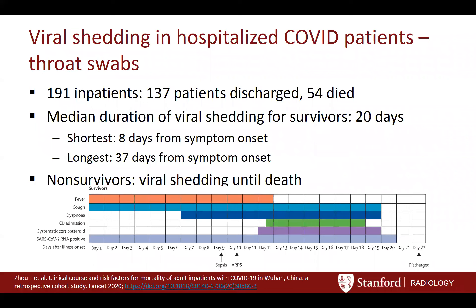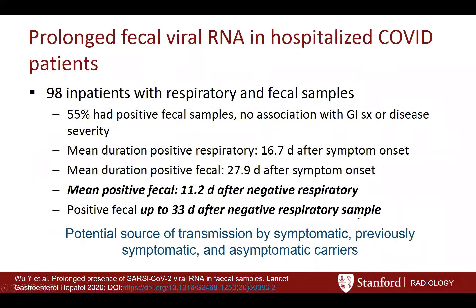In terms of infectivity, a study looked at viral shedding in 191 inpatients with known outcomes — either discharge or death. In people who survived, the median duration of viral shedding was 20 days — three weeks. For people who died, viral shedding lasted until the time of death. The shortest shedding duration was eight days; the longest was 37 days. Notably, the median duration of viral shedding was longer than the median duration of symptoms including fever, cough, and dyspnea.